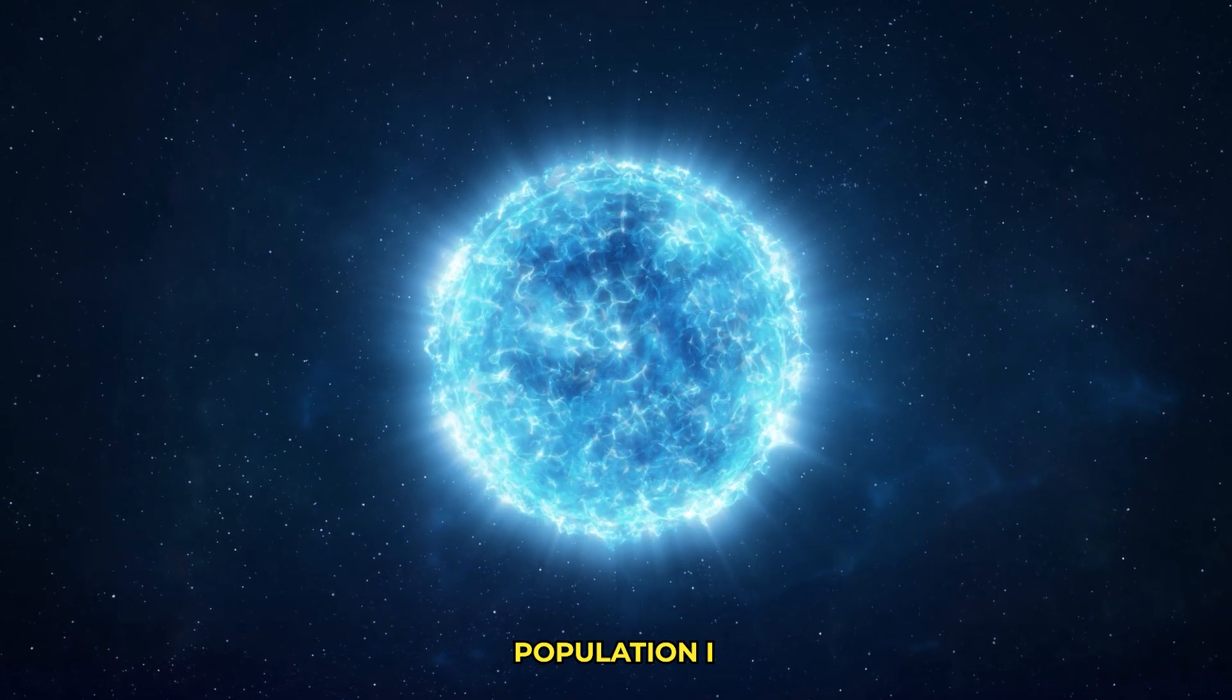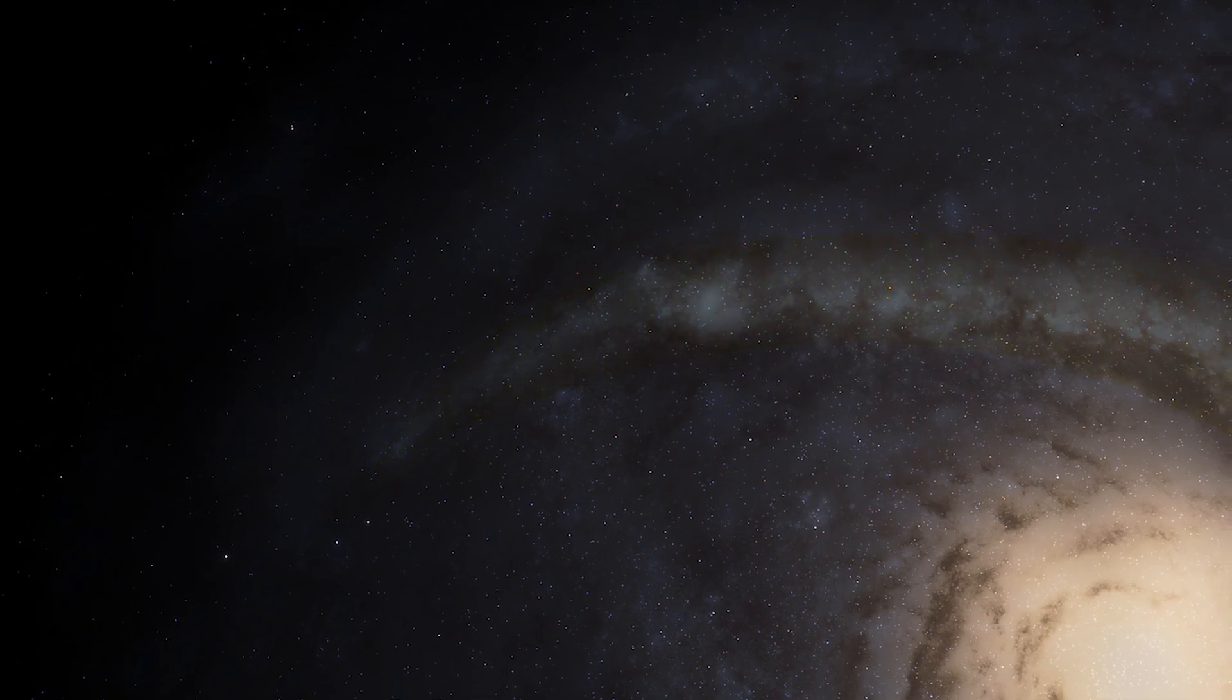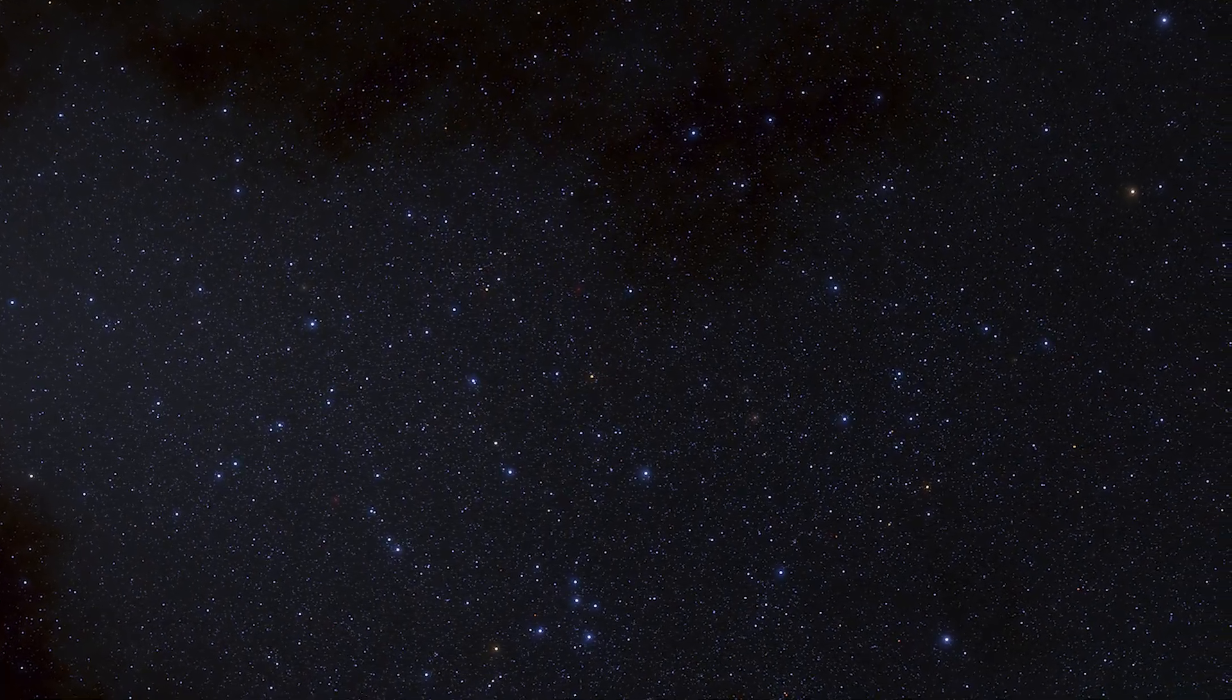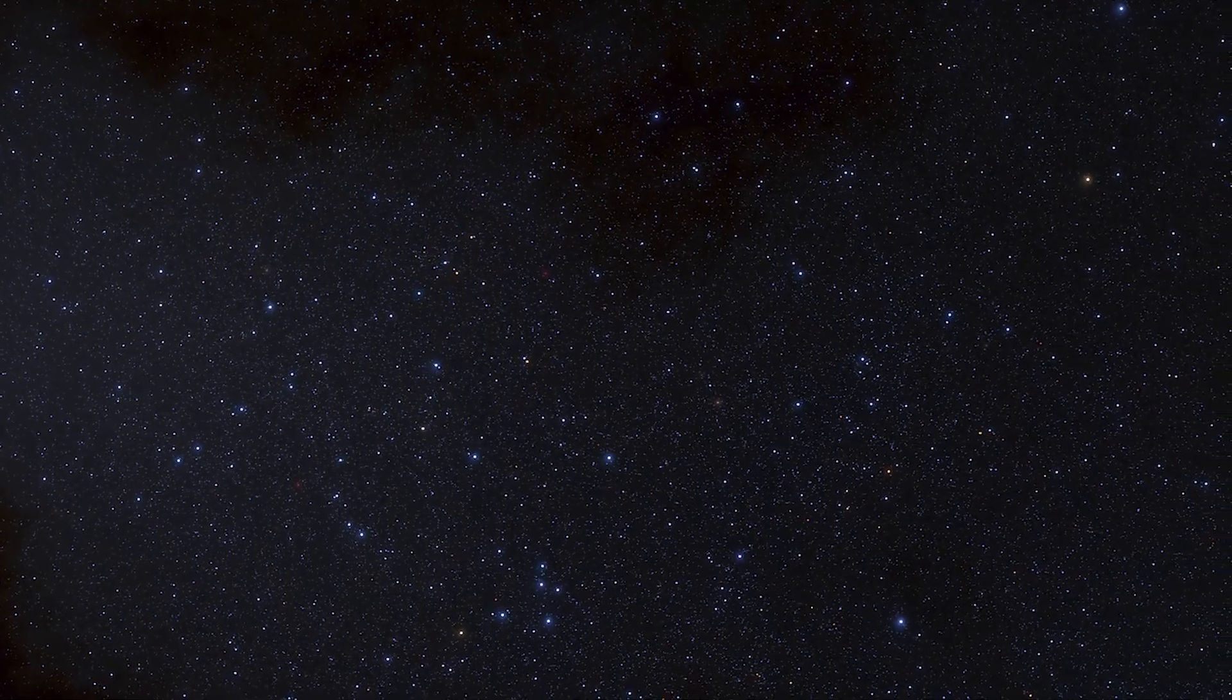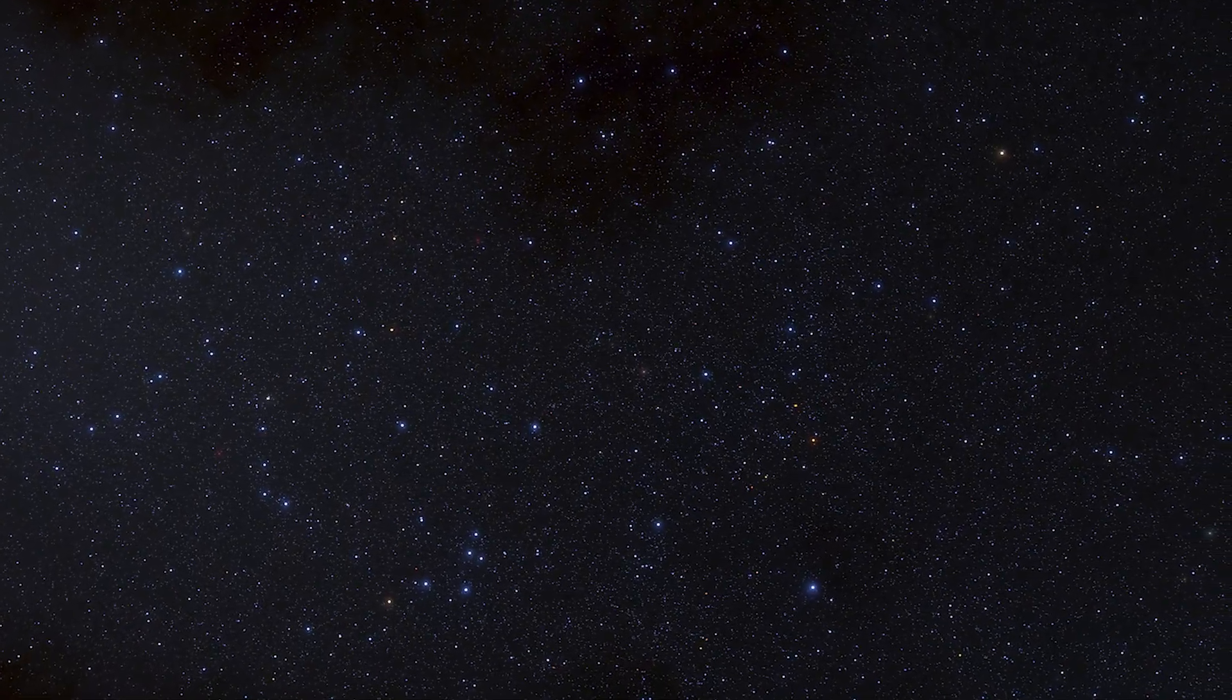Population 1 stars are the youngest with the highest metallicity. They are found in the spiral arms of galaxies, like our Sun, and have a wide range of ages, but generally formed after the galaxy had already enriched itself with heavier elements through successive generations of stars.